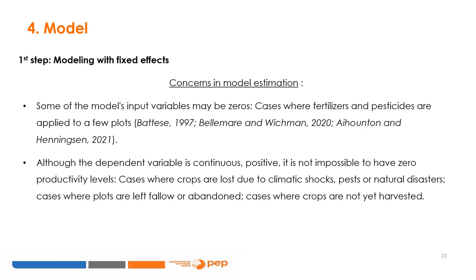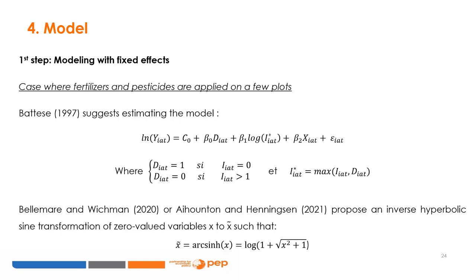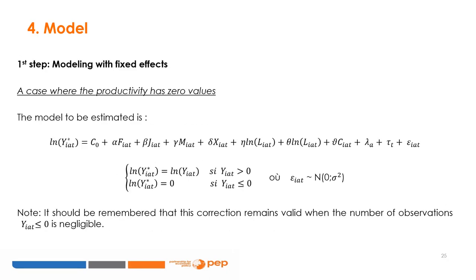There are many concerns with the fixed effects model. Some input variables may be zero in cases where fertilizers and pesticides were applied to only a few plots. Although the dependent variable is continuous and positive, it is not impossible to have a zero productivity level — for example, cases where crops are lost due to climatic shocks, pests, or natural disasters; cases where plots are left fallow or abandoned; and cases where crops are not yet harvested. Estimates can be made with household-year or crop-year fixed effects. The Tobit 1997 model is suggested when the dependent variable has zero values, though this correction is only valid for a non-negligible number of observations.